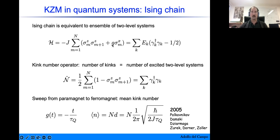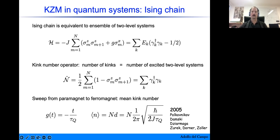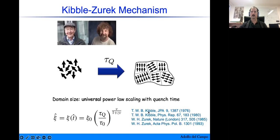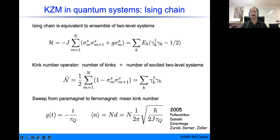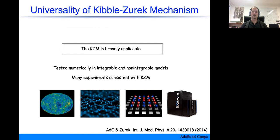To drive the phase transition you vary the magnetic field in time from a large value to a small value, linearizing the time dependence and introducing a quench time scale τ_Q. The result, shown by analytical and numerical approaches, is that the expectation value of the kink number operator in the final non-equilibrium state scales with the square root of the inverse quench time. This is consistent with the Kibble-Zurek prediction when the critical exponents ν and z are both equal to one, giving an exponent of one-half.